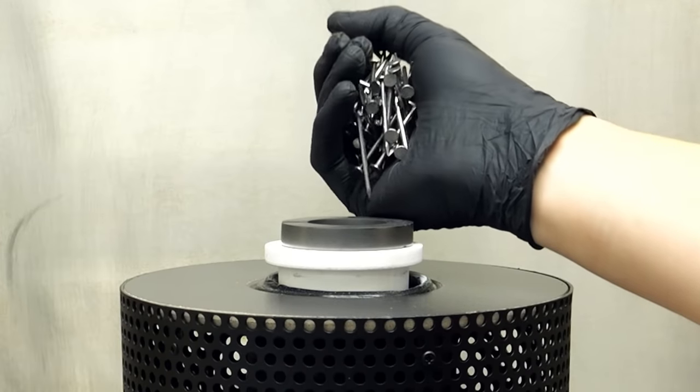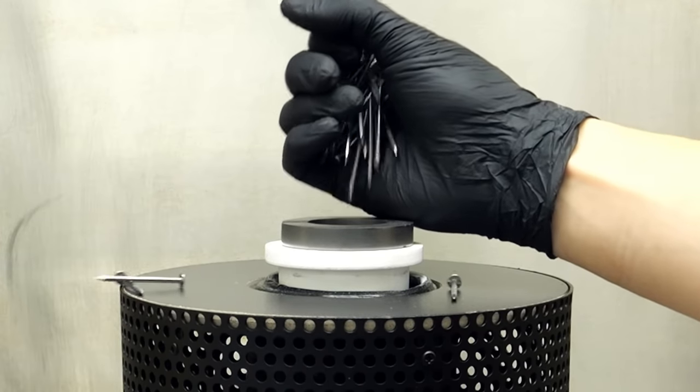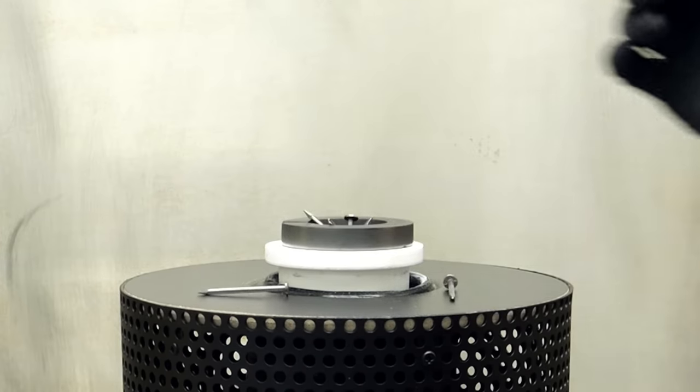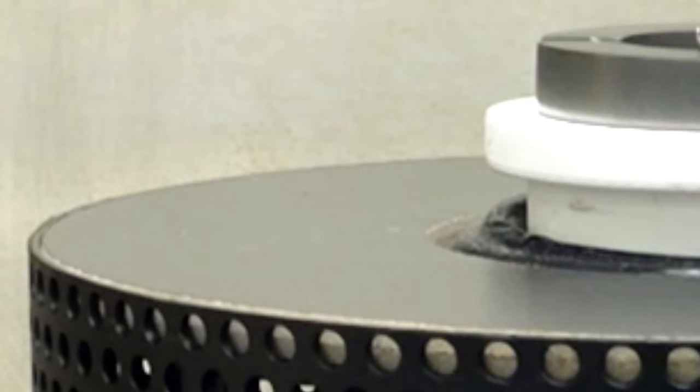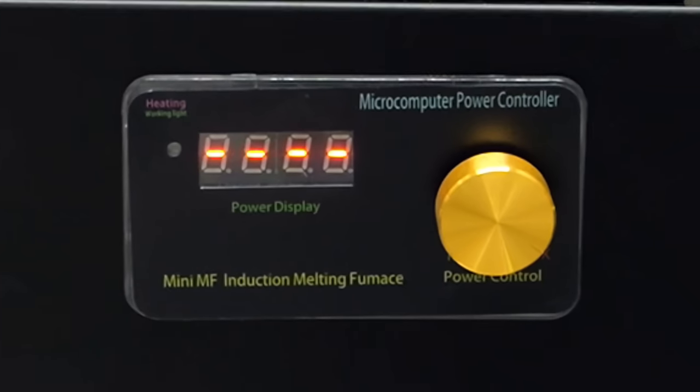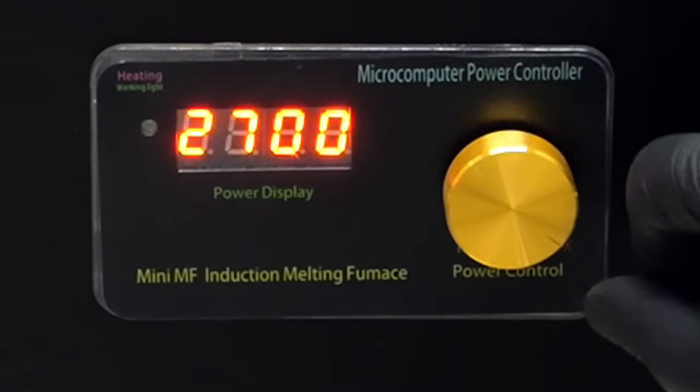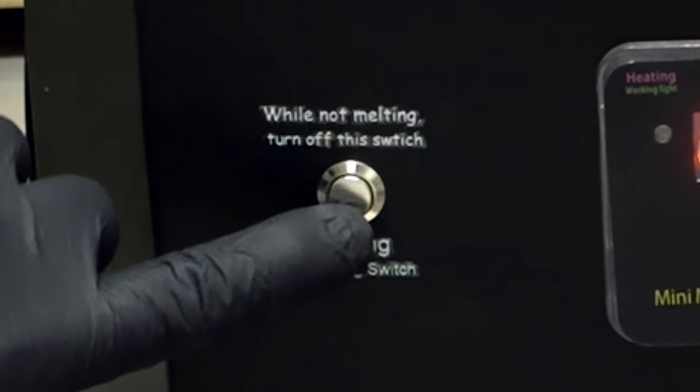To get started, I just have to very carefully transfer all of these nails into the crucible. Then after that, I'll just crank up the power dial to 3,500 watts, and I'll turn it on.